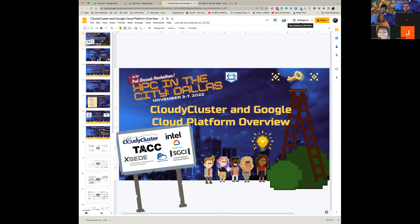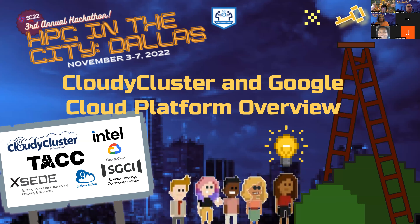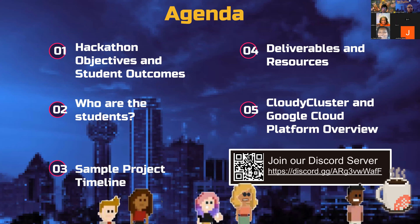We're going to hand it over to our presenter today, Cole McKnight from Omnibond. Today's agenda: we'll go over a couple of objectives and student outcomes so everyone is aware of what's expected, some information about our students, deliverables and resources, and then we'll jump into our CloudyCluster and Google Cloud Platform overview.